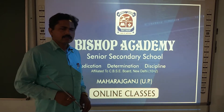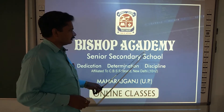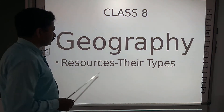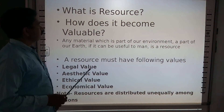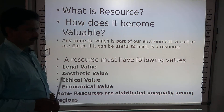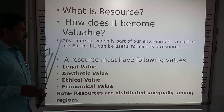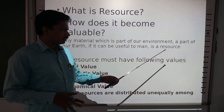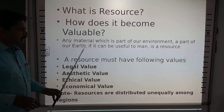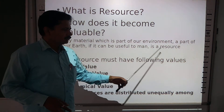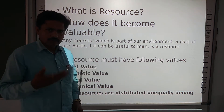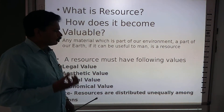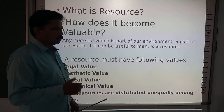Friends, today once again I welcome you in Bishop Academy online classes. Today we have to discuss the very first chapter of Geography, that is resources and their types. So first of all we have to make it clear what resources are. Any material which is part of our environment that has been found on this earth, and if it can be useful to man, is a resource. Everything in this environment which is useful for humans is a resource.